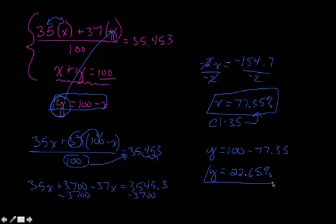And we'll find out that y is equal to 22.65%. And again, this is the percent abundance of our second isotope, the chlorine-37 isotope. So it tells us that 22.65% of all chlorine atoms have a mass of 37, and 77.35% of all chlorine isotopes have a mass of 35.